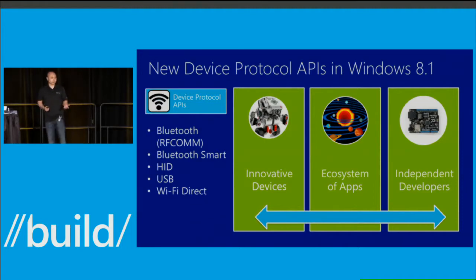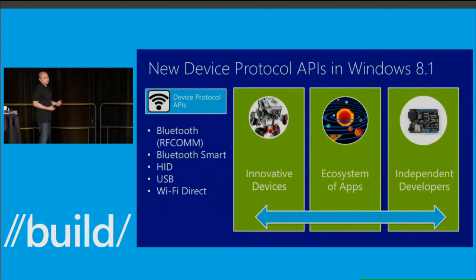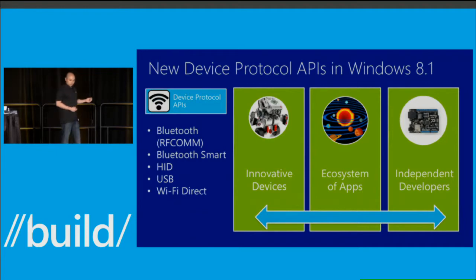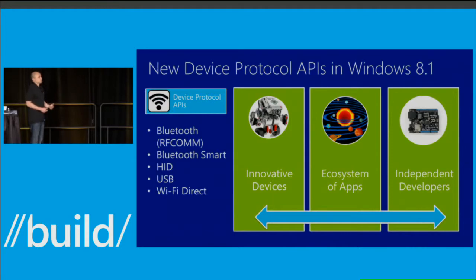For hardware developers in the audience, this means you can now allow others to write applications to your devices. You can use a standard protocol, or take your own proprietary protocol, publish it, and create an ecosystem of applications around your device. For software app developers, you can take many off-the-shelf retail devices and start writing apps for them, then deliver them via the Windows Store just like any other app. And for hobbyists and tinkerers who like to create their own devices, Windows is now a really powerful platform to bring your inventions to life.